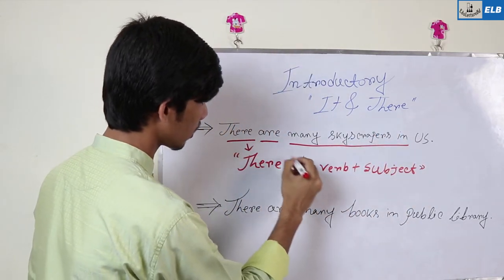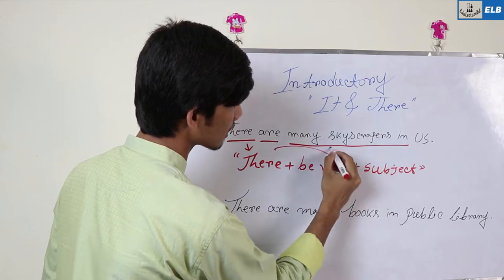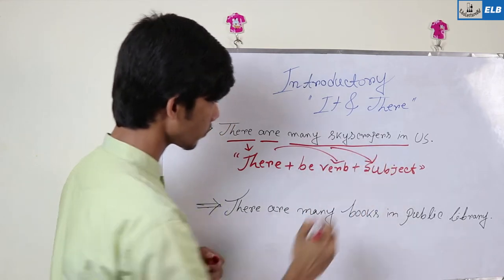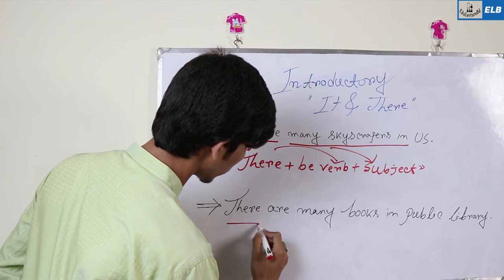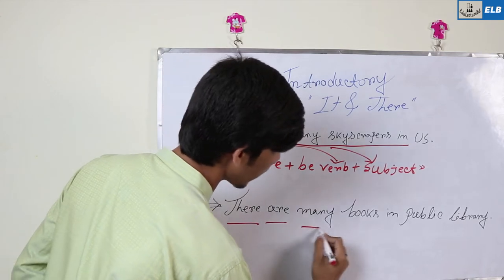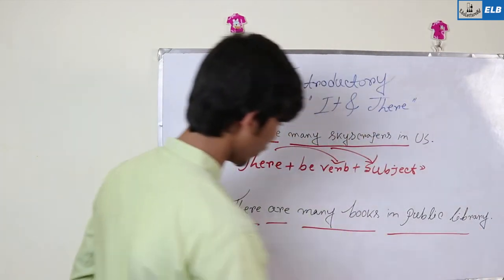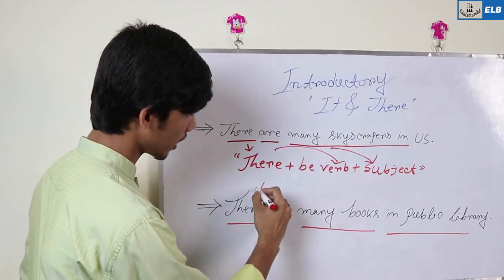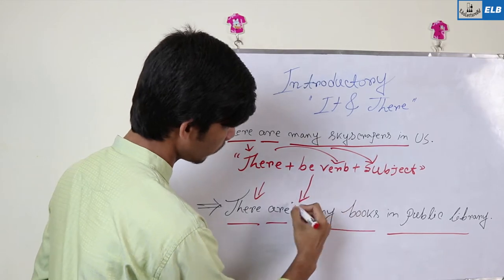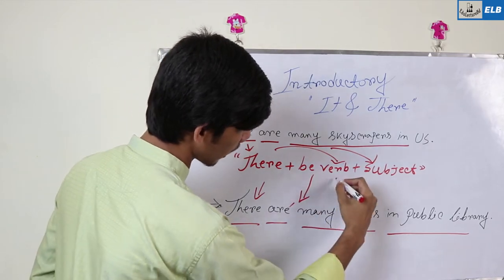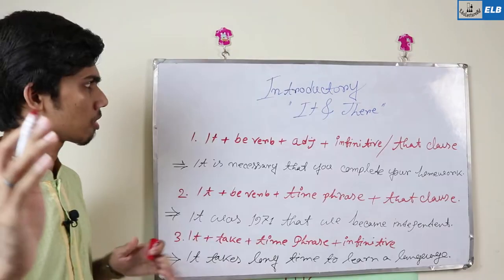Here, 'there' is the introductory word, and the real subject follows. Another example: 'There are many books in the public library.' 'There' is the introductory word, 'are' is the be-verb, and the subject is 'many books.'